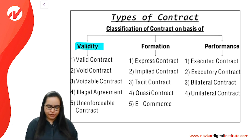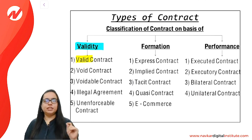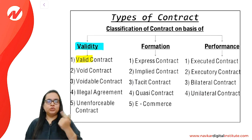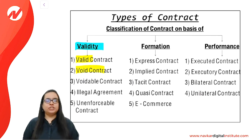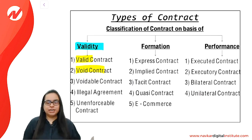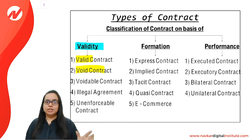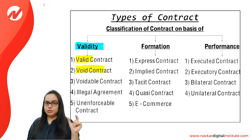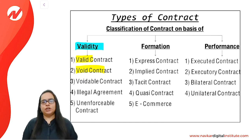A valid contract means enforceable by law — both parties can file a case. Void means not enforceable by law. It 'ceases to be enforceable' — for example, a house destroyed by natural calamity or floods. So it ceases to be enforceable by law. Can you file a case? No, because the contract is void.